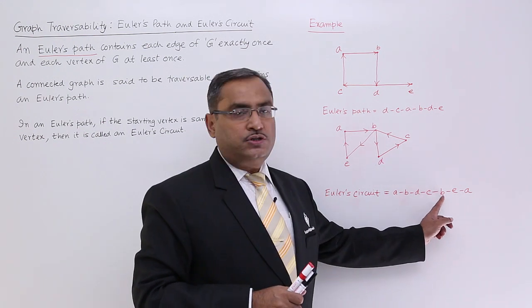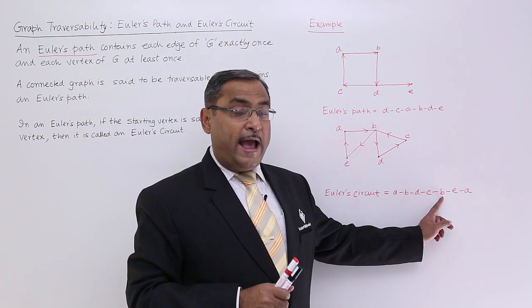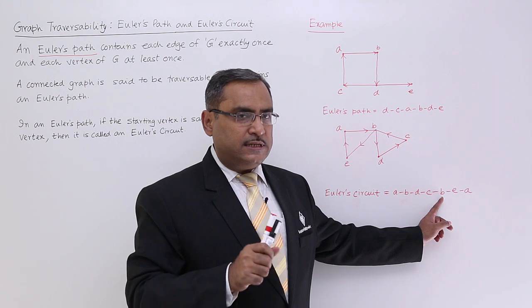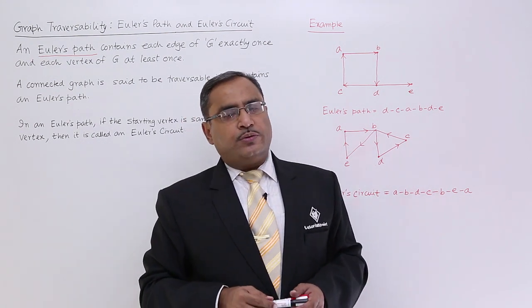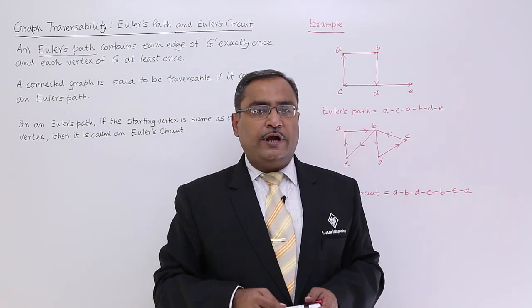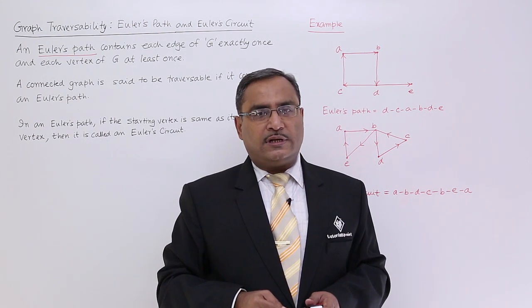Here you see, B has got traversed twice. That is not an issue—at least once all the vertices are to be traversed. So in this way we have defined graph traversability, Euler's path, and Euler's circuit.